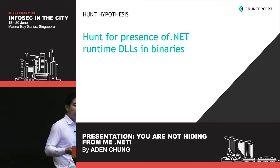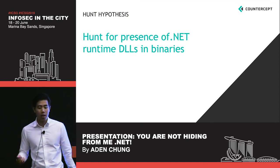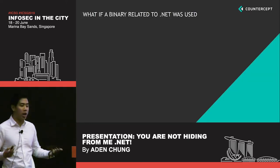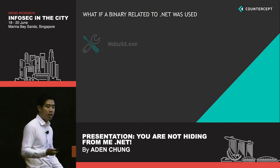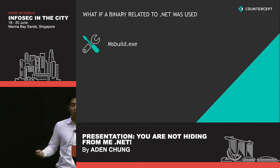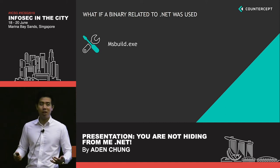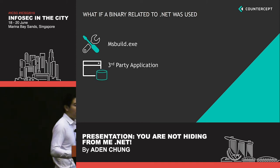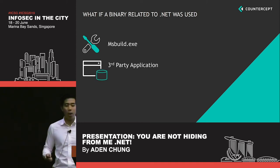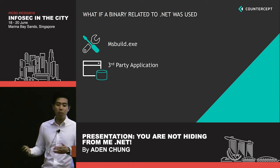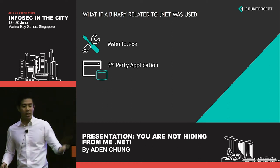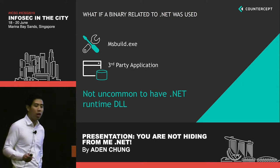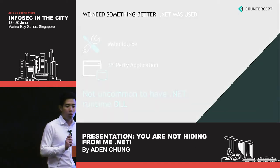This can help us flag certain anomalous activity. But as usual, there's always a but. What if the attacker were to use a binary related to .NET, such as MSBuild.exe — a .NET application that builds .NET applications — or a third-party software like SQL Server, where you can actually use it to execute C# code? With these processes, it's not uncommon for them to have a .NET runtime DLL. So we need something better.